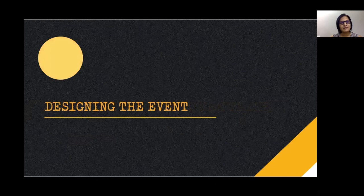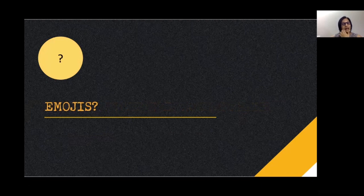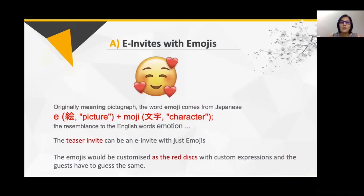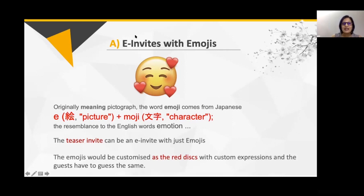Now I'll tell you how we designed the entire event. Do you know what emojis are? Emojis are pictographs — in Japanese, 'emoji' means a picture and a character. Emojis were actually invented by Japan, and we use them constantly in WhatsApp, social media, and all communication. So what we suggested was to have e-invitations or email invitations featuring emojis, as a teaser.